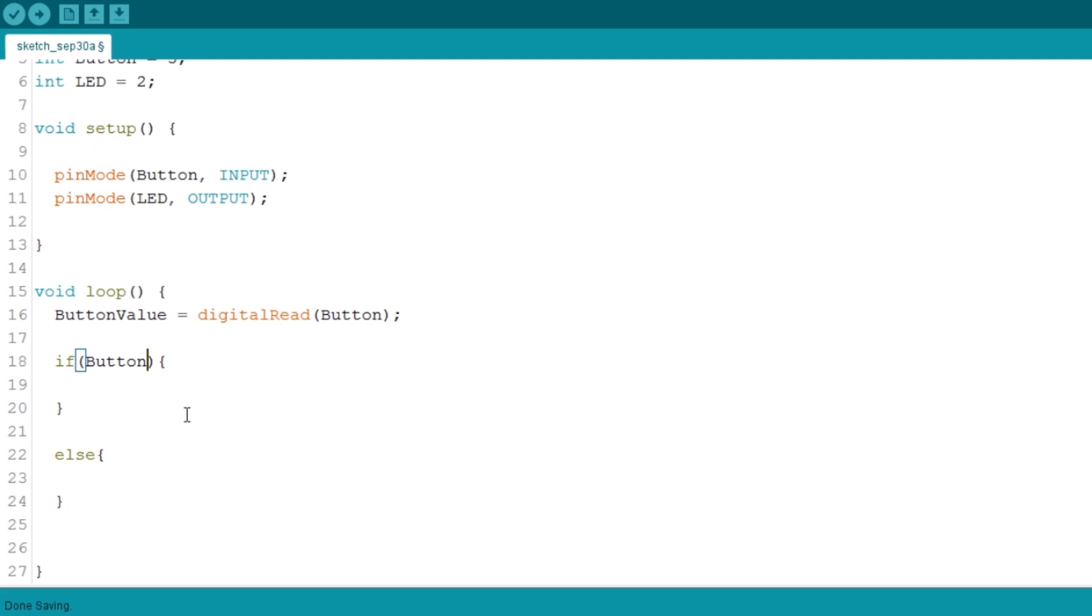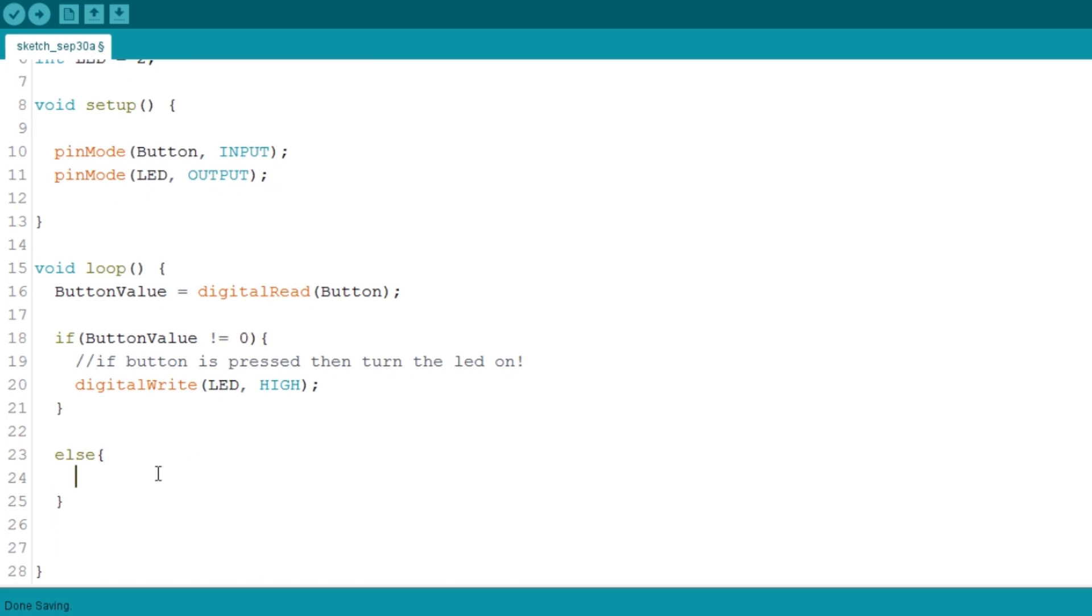The statement is, if button value not equals to 0, then turn it on. You can turn it on by using the digitalWrite function. Don't forget to write in the parameters which pin and state you wish to change. If anything else happens, or by other words, the button value is 0, the LED will turn off. Make use of the digitalWrite function to turn it off. Again, don't forget the pin and the state you wish to change.